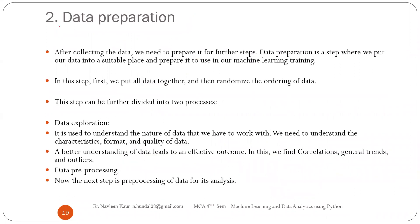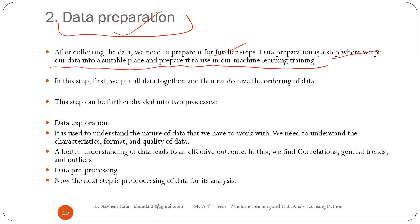Next is data preparation. Whenever we get the data from certain sources, we are not sure whether that data is accurate or ready to feed directly — maybe we have to make some modifications or arrange it. That is known as data preparation. After collection, we need to prepare it for further steps — we put our data into a suitable place and prepare it to use in our machine learning training. We put all the data together and then order and arrange it.